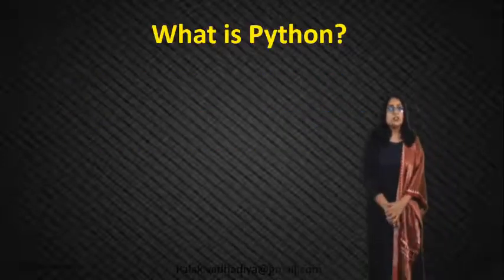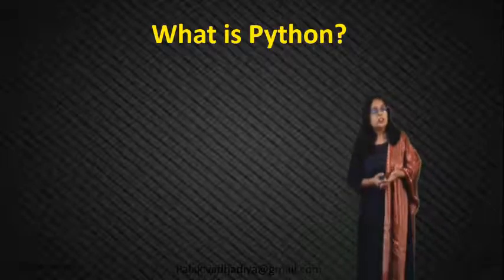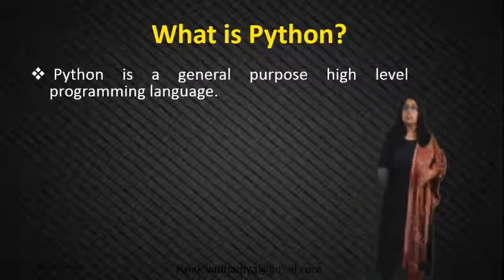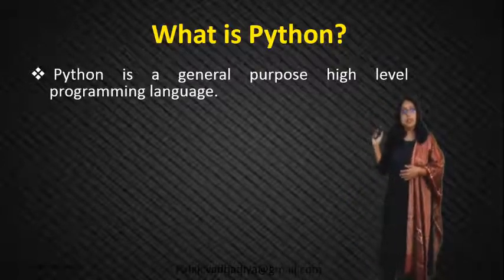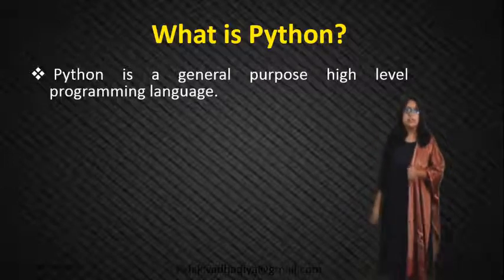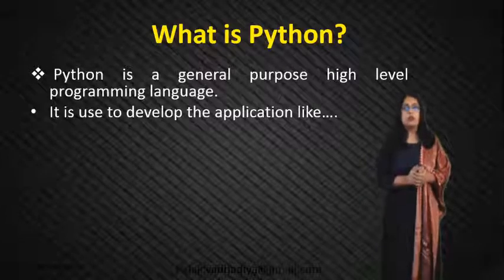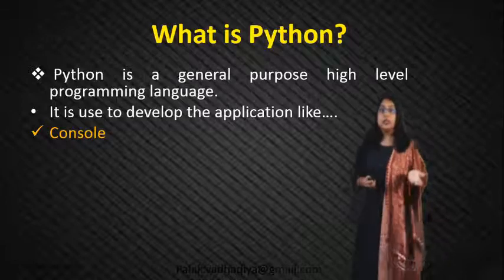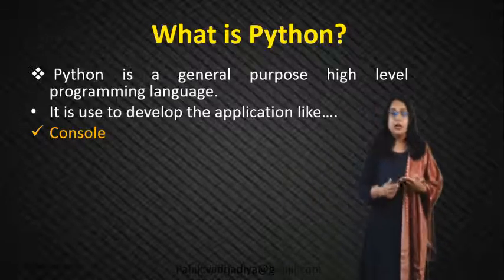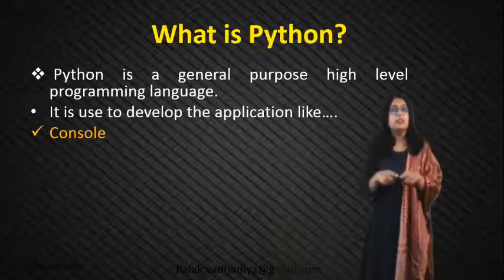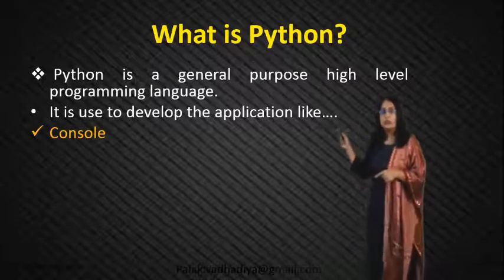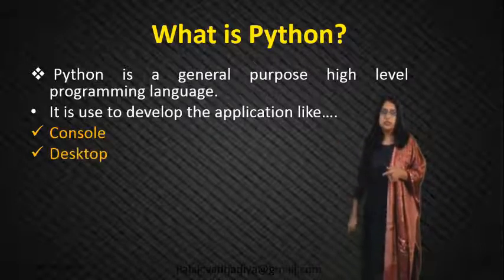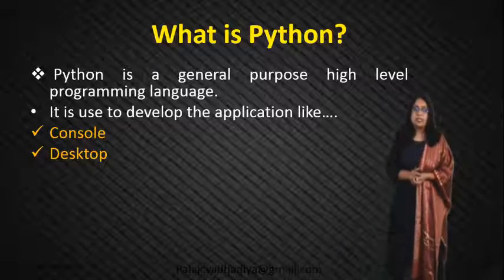First of all we will see the introduction of Python. The first step is the definition of Python. Python is a general purpose, high level programming language. It is used to develop applications — just like the console, that black screen type of application you may have seen. That kind of application you can also develop with the help of Python — that is what we call a console application. The next type is a desktop application.